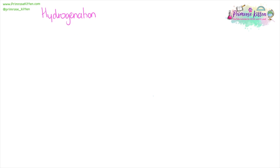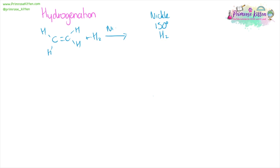For a hydrogenation or hardening reaction, we are going to need a nickel catalyst, and it needs to be done at 150 degrees in the presence of hydrogen. So we have our alkene, we add hydrogen with nickel at 150 degrees, and we will end up with our alkane.